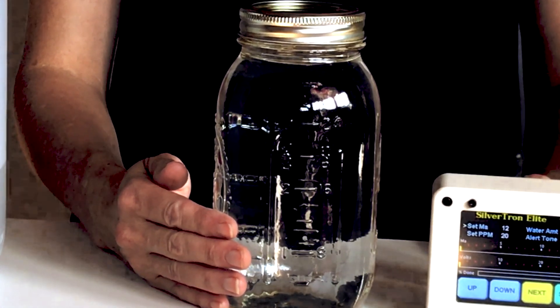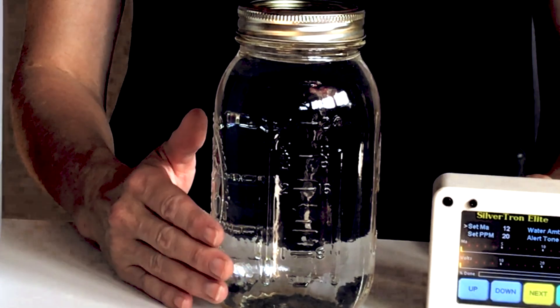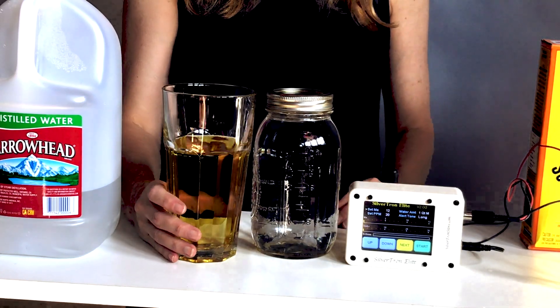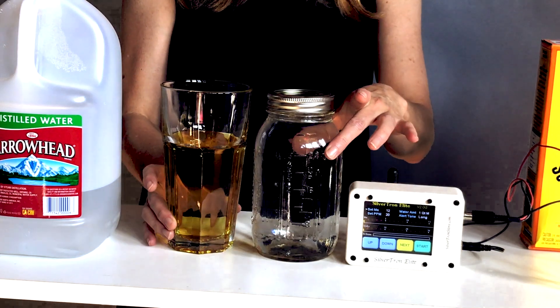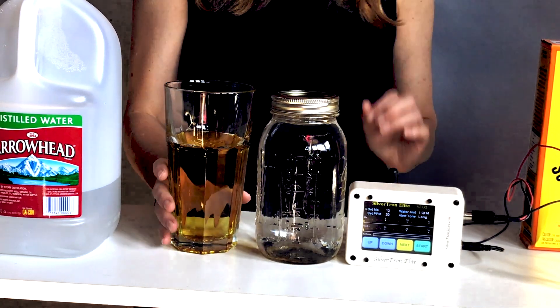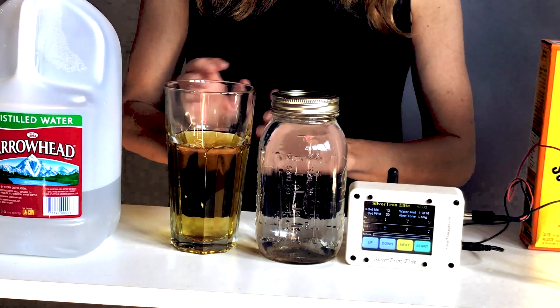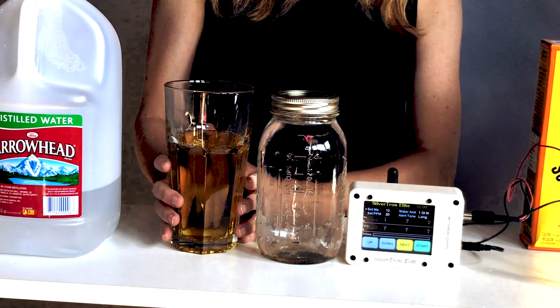Here's some 20 ppm that I made yesterday. You can see the difference in color. So ionic silver will taste metallic, colloidal silver is tasteless and is pale yellow in color.